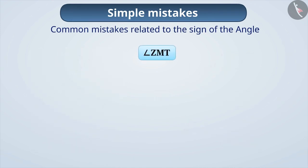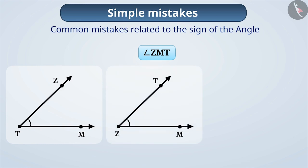If the name of the angle is given, children are not able to tell which the vertex is. If the name of the angle is angle ZMT, then the middle letter denotes the vertex M. That is, the angle formed is angle ZMT.